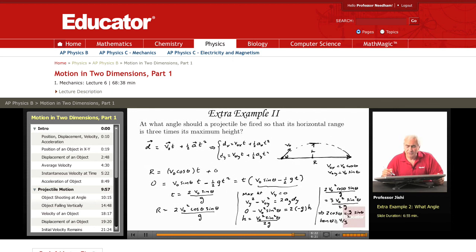Tangent theta is 4 over 3, so theta is tangent inverse of 4 over 3. So this is the angle at which we should shoot a projectile in order for its range to be 3 times its maximum height.